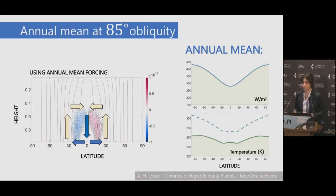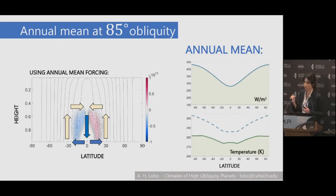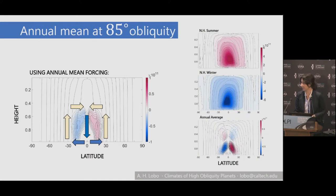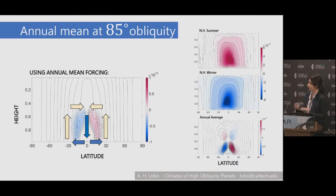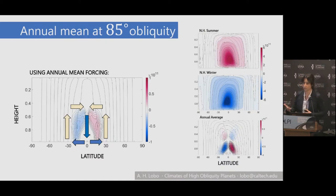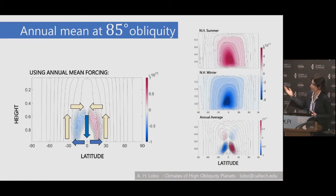This has implications for circulation. If you force a model with your annual mean insolation, you would actually get a reverse Hadley cell—descending motion at the equator and ascending motion at the poles. It's also very weak and somewhat unstable, and it's not what you actually get. A high-obliquity planet forced seasonally has very strong cross-equatorial cells, stronger than the 23-degree case. Even if you wanted surface winds or high-altitude winds, you'd want to look at seasonal variability to get the correct magnitude, because annual mean forcing will really underestimate your winds.